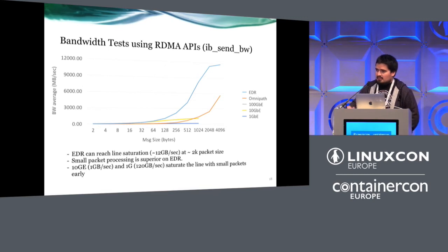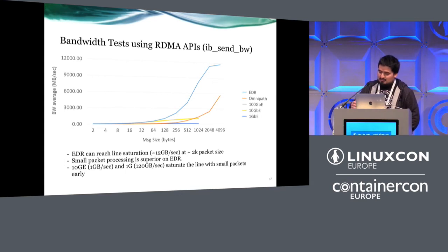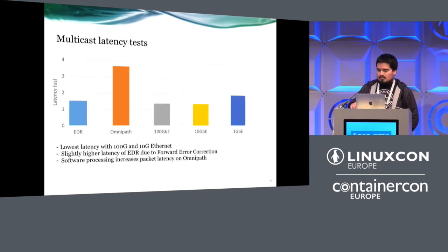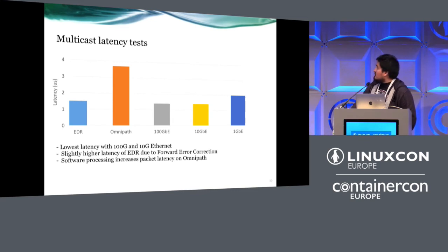Speaking to vendors, because 100 gig got delayed, 200 gig might never be a thing — the 400 gig timeline is slowly coming through. So basically just focus on 100 gig or 400 gig when it becomes available. Most of what we do in-house is multicast, and here are some multicast latency results we got.